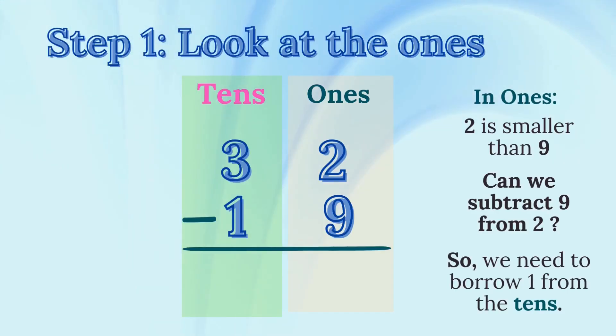Step 1. Look at the ones place. In 32, we have two ones. In 19, we have nine ones. Can we subtract 9 from 2? No. 2 is smaller than 9. So, we need to borrow from the tens place.